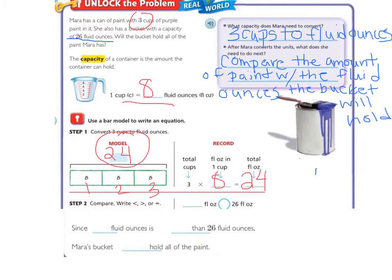Let's compare in step 2. 24 fluid ounces is less than 26 fluid ounces. Moving down, it says, since 24 fluid ounces is less than 26 fluid ounces, Mara's bucket will hold all of the paint.